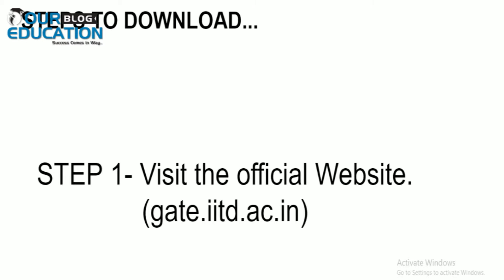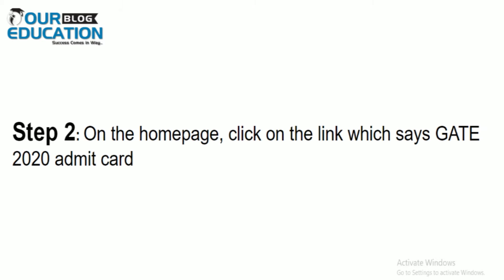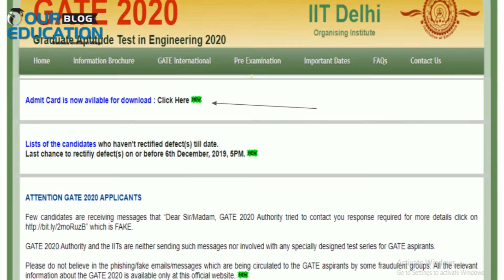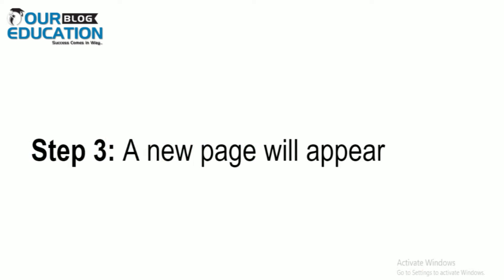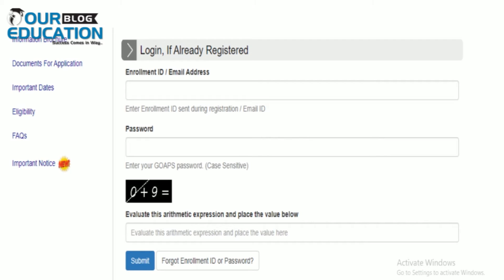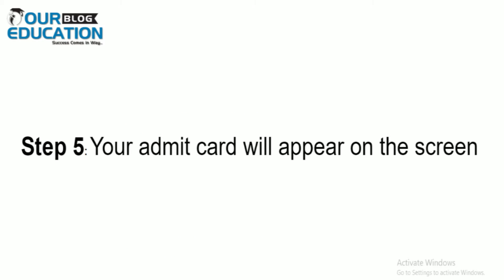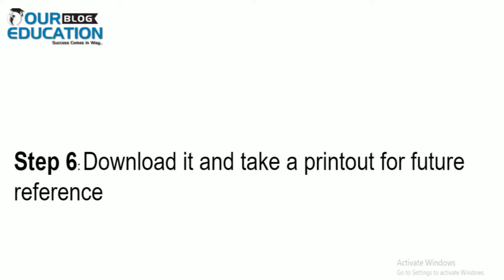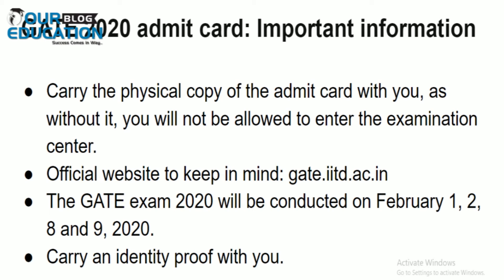Now, how to download your admit card — follow these steps. Step 1: Visit the official website. Step 2: On the home page, click on the link that says 'GATE 2020 Admit Card', as you can see on your screen. Step 3: A new page will appear where you will be asked to fill in various details. After filling those details, the next page will display your admit card, which you can download or take a printout of.